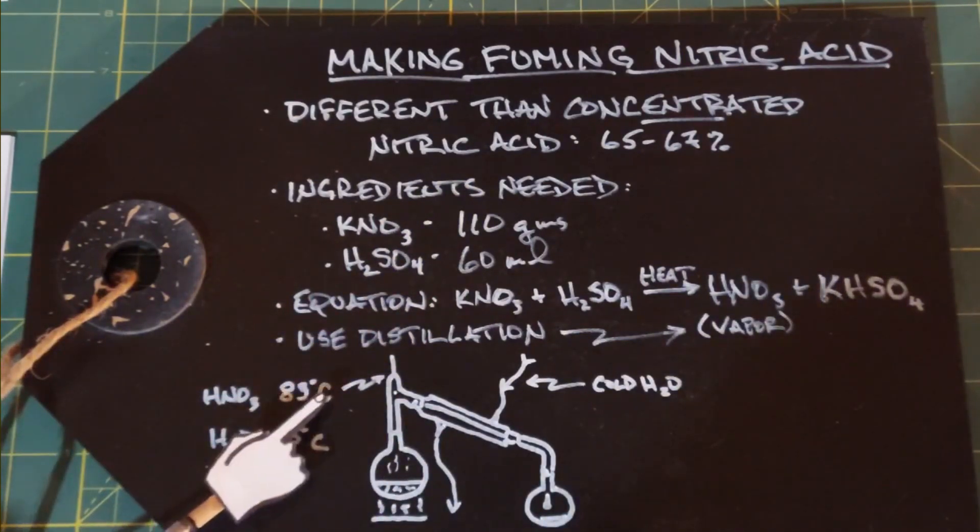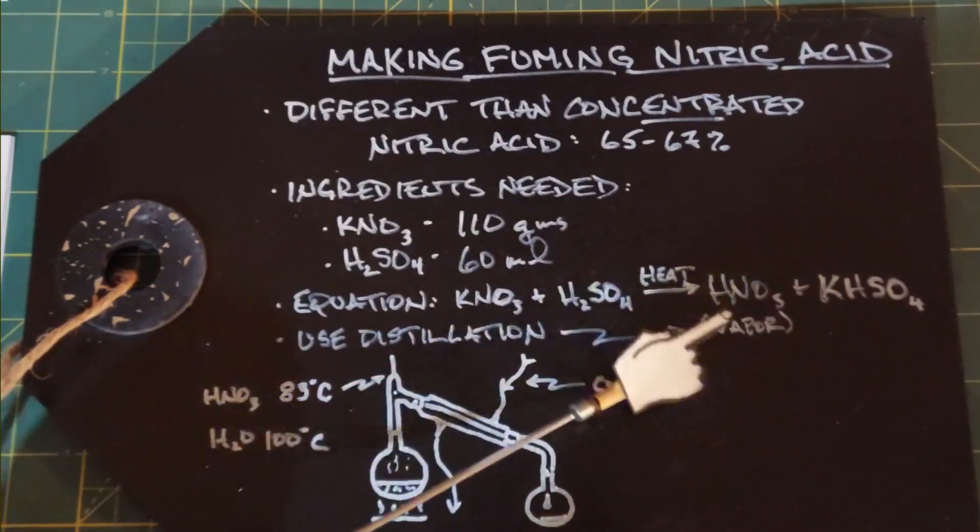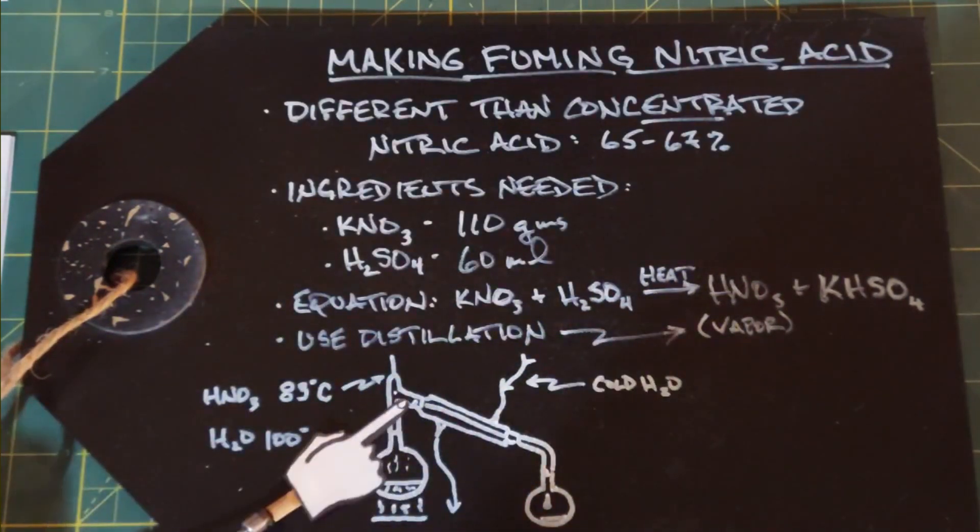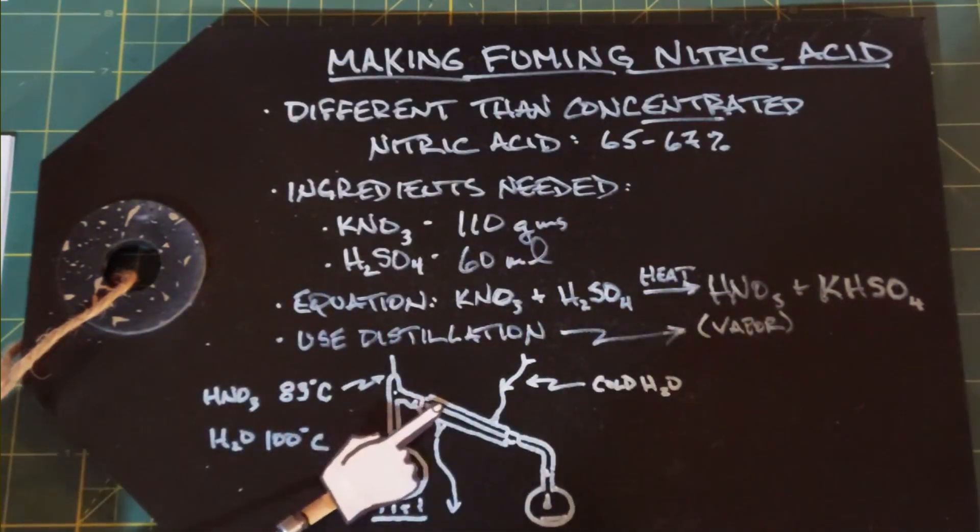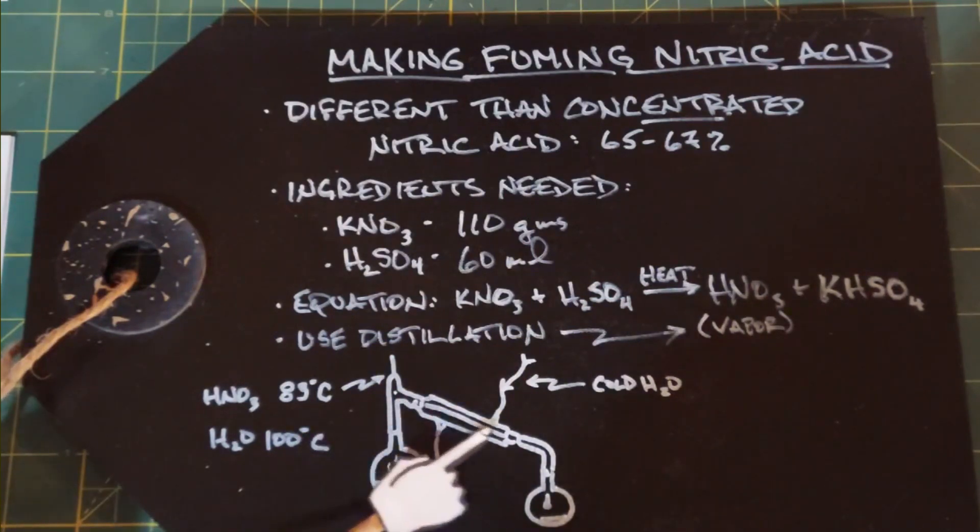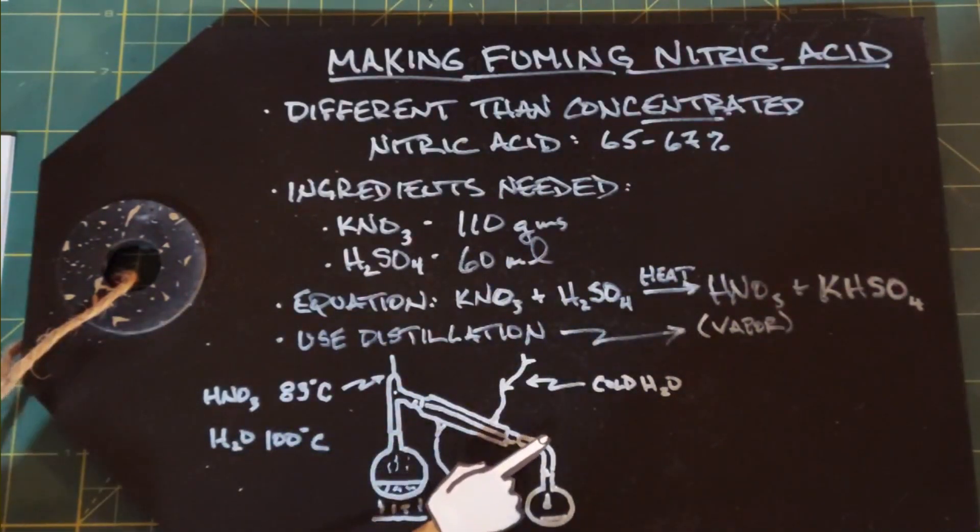As soon as this hits 83 degrees on your thermometer, you know you have the vapors of the nitric acid coming up. They'll have nowhere to go and they'll be forced into the distillation tube with cold water coming in. It'll turn into a liquid and drip.